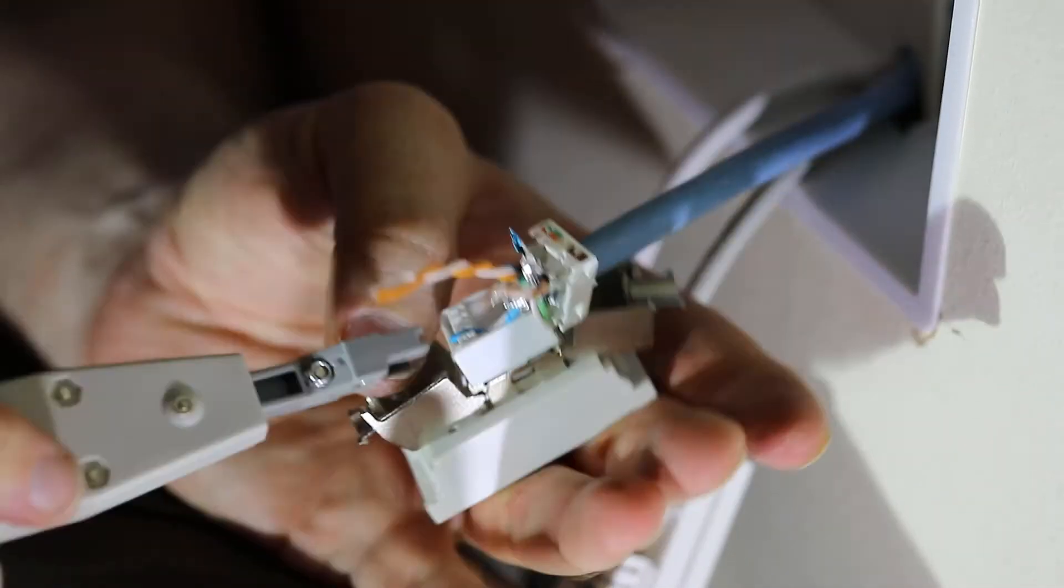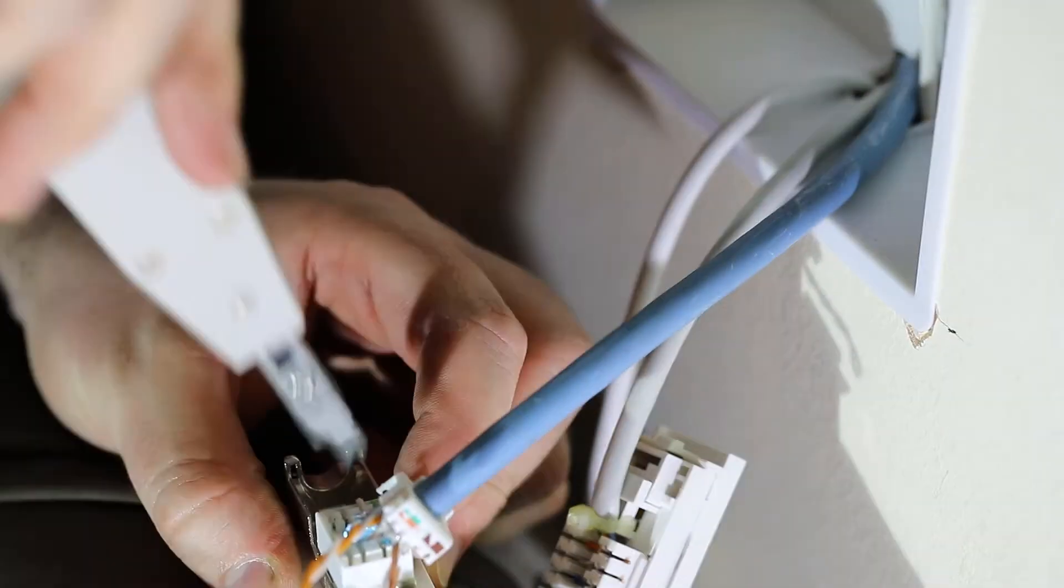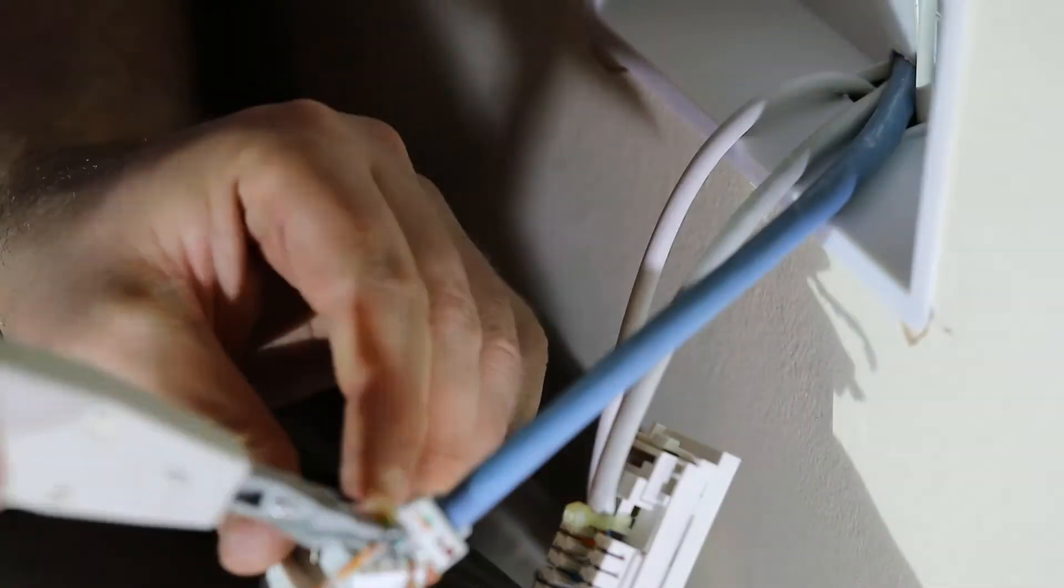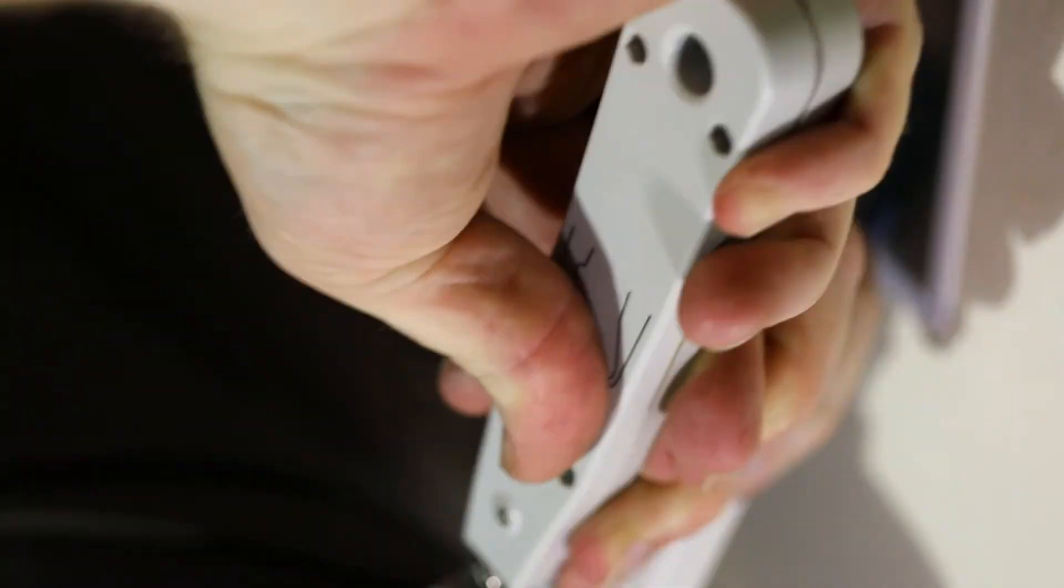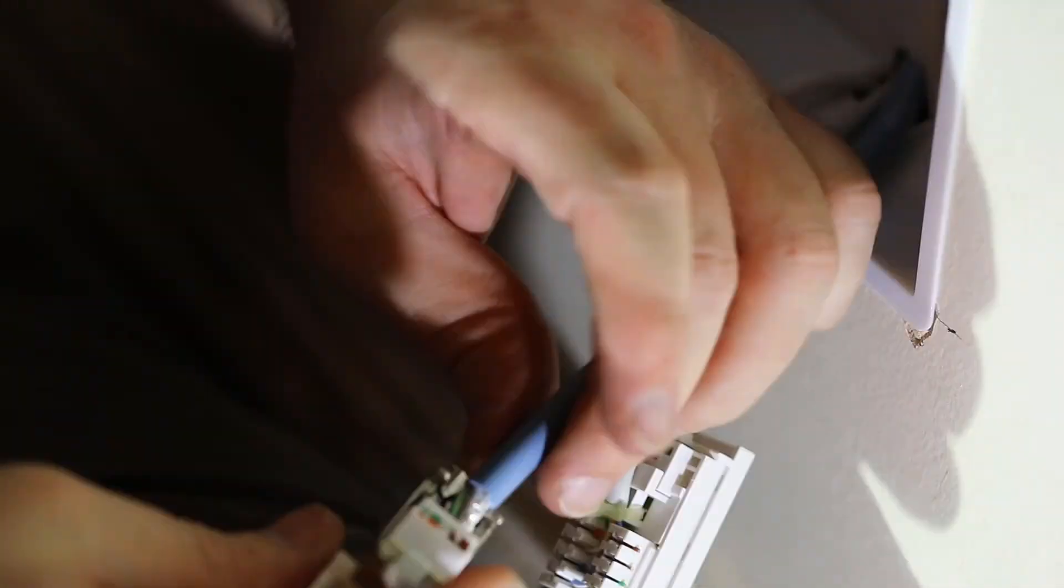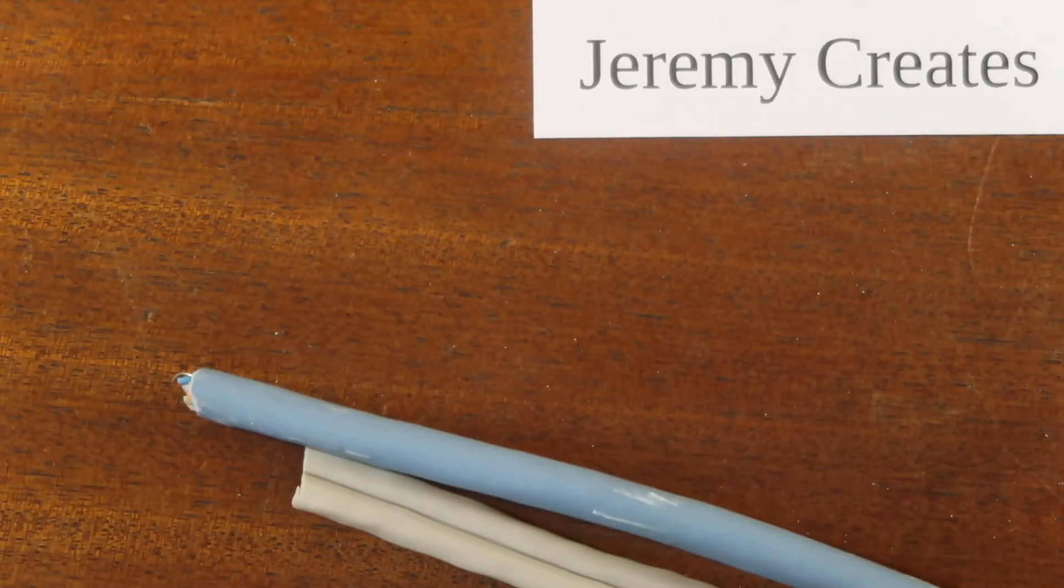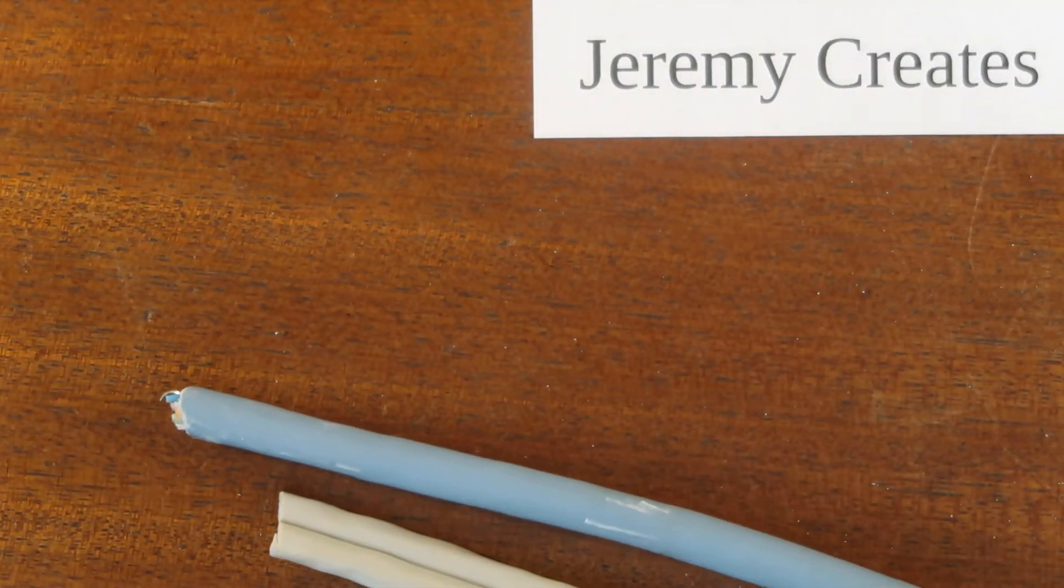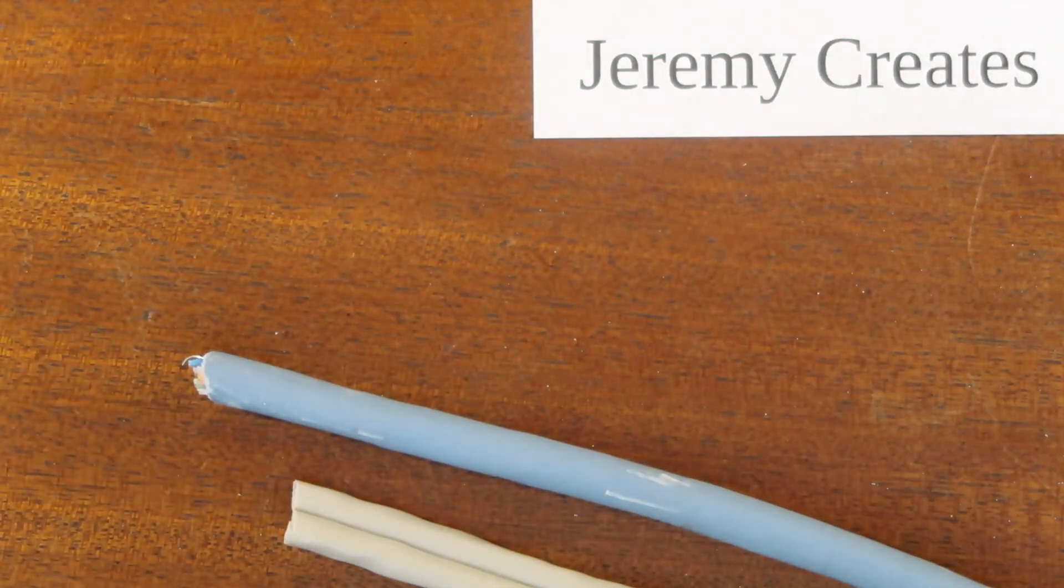For the Cat5e there have been a couple of recent technology advances which means that you may be able to get two and a half gigabit per second through them but that means that every device or the devices at both ends have to support that standard and it's not all that common yet and you're also more susceptible to interference trying to run up to those sorts of speeds.